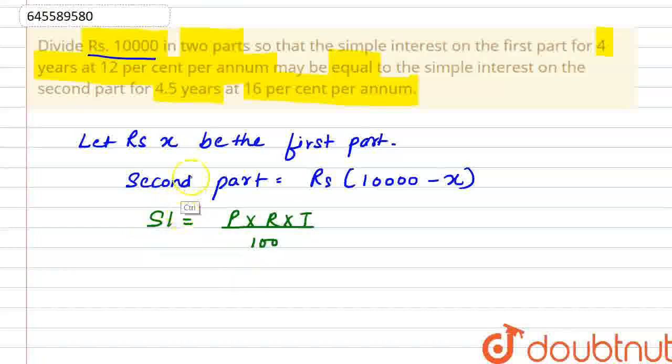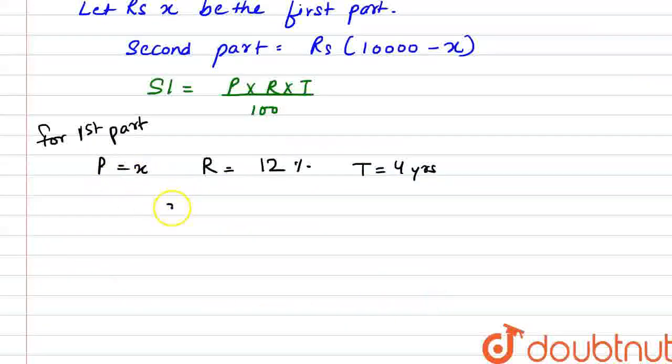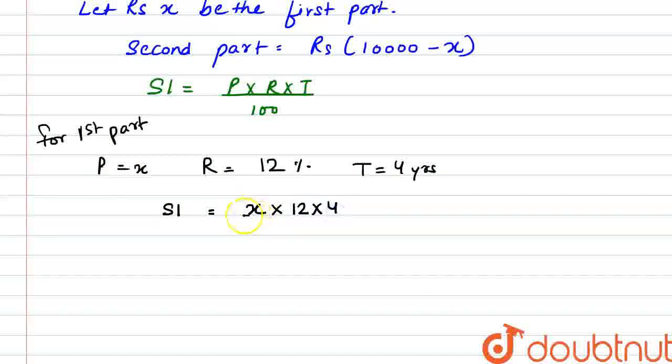So, if we look for the first part here, for the first part, what is our principle? P is x. Rate of interest is 12% and time is 4 years. So, our simple interest is x multiplied by 12, multiplied by 4, divided by 100. And if we divide it from 4, so we can write it like 48x divided by 100.